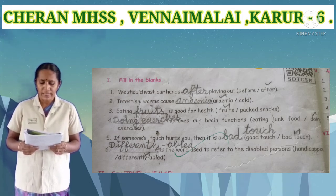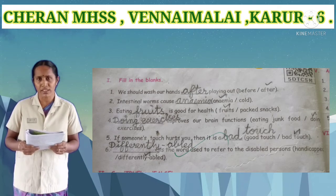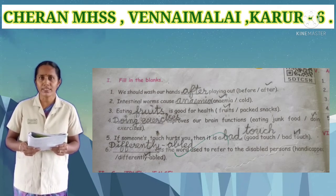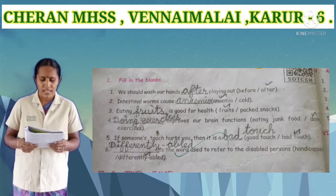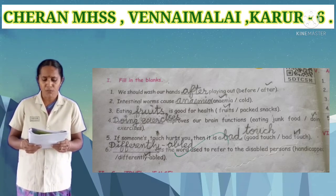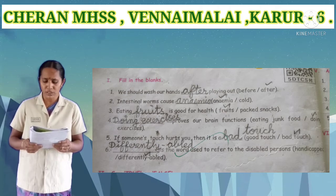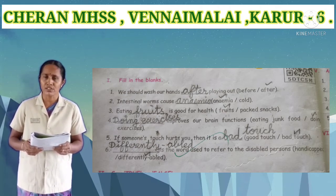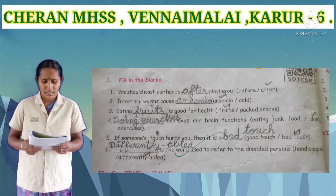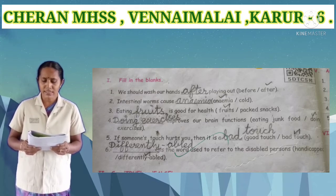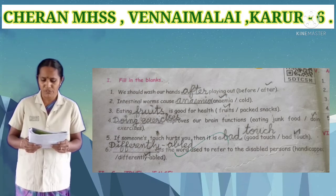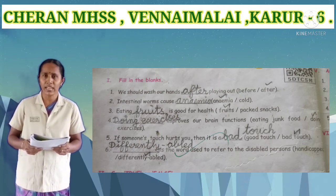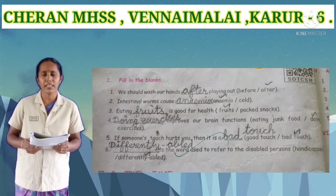Fourth one: blank improves our brain function — eating junk food or doing exercises. Doing exercises is the correct answer. Fifth one: if someone's touch hurts you, then it is the blank — good touch or bad touch. Answer is bad touch. Sixth one: blank is the word used to refer to a disabled person — handicapped or differently abled. Differently abled is the correct answer.